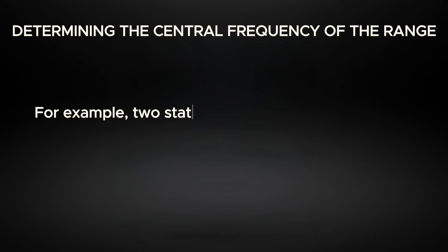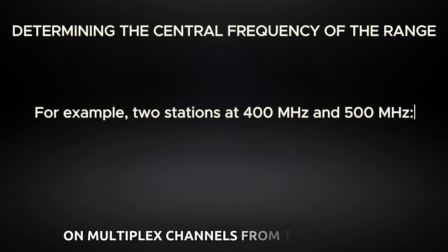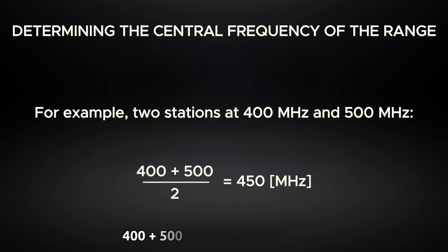Example: suppose we need to receive digital TV on multiplex channels from two stations. One station operates at 400 megahertz, the other at 500 megahertz. We find the arithmetic mean: 400 plus 500 divided by 2 equals 450 megahertz. This is the frequency we will build the antenna for.